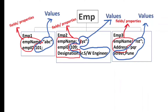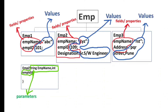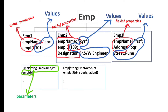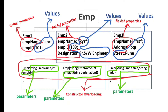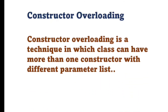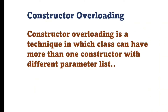Each employee object has different fields and therefore a different form — the same as the cake example. To initialize Employee 1 we need a constructor with parameters employee name and employee ID. To initialize Employee 2 we need another constructor with parameters name, ID, and designation. To initialize Employee 3 we need a constructor with parameters name and address. So we have created three constructors with different parameters, and having more than one constructor in a class with different parameters is nothing but constructor overloading.